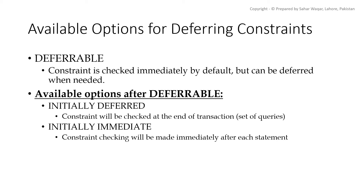We have a keyword DEFERRABLE, which says that the constraint will be checked by default, but it can be made deferrable when needed. We have given options which will be mentioned after the DEFERRABLE keyword. Option 1 is INITIALLY DEFERRED, which says that constraint checking will be delayed until the end of the transaction. That is, until the transaction ends, the DBMS will not check any kind of constraint in the given set of queries — so the DBMS will be at violation for some time.